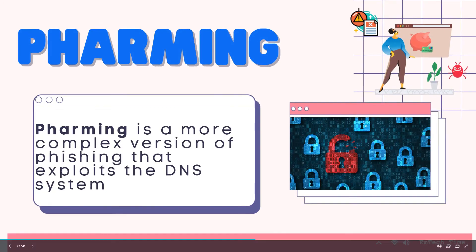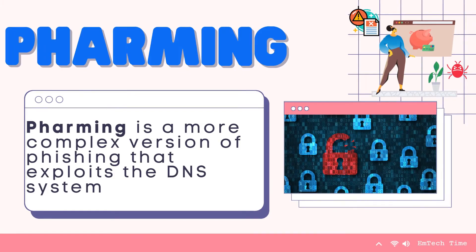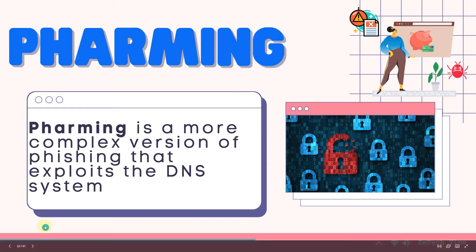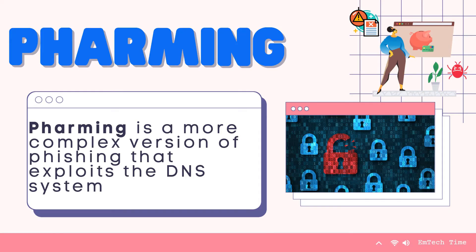The next type is pharming. Pharming is a more complex version of phishing that exploits the DNS system. Pharmers often create web pages mimicking that of a trustworthy business, such as an online banking login page. Users will enter their details and then the pharmer will gather their credentials and passwords.